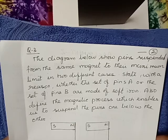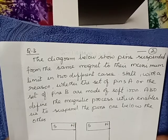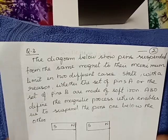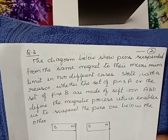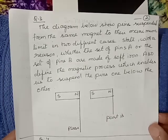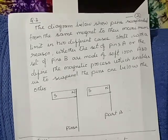Also define the magnetic process which enables us to suspend the pins one below the other. Note down the diagram. Allotment: 2 marks.